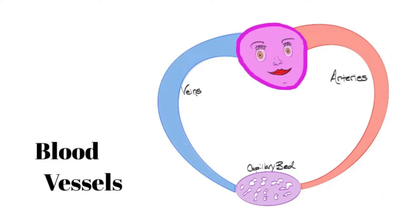This lecture is going to focus on blood vessels. What we have here is a very basic, totally unrealistic schematic of the blood vessels which leave the heart and return to the heart. Blood vessels leaving the heart are arteries; vessels returning blood back to the heart are veins. Arteries carry oxygen-rich blood; veins carry oxygen-poor blood. In between the two we find a capillary bed — a collection or congregation of capillaries.